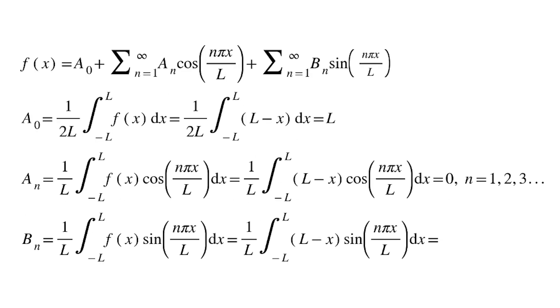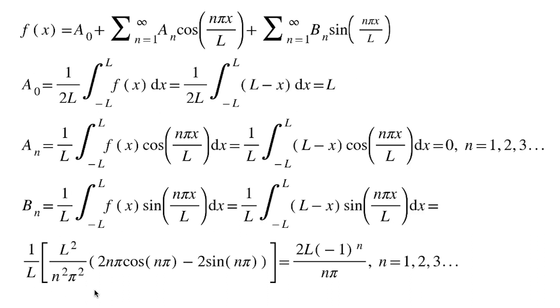For BN, you might have to do a little more work, but the logic is pretty much the same. Plug into the equation, replace f of x with L minus x, and this time, instead of cosine, it's sine. Do the integration, you get this somewhat ugly-looking equation, but it reduces somewhat nicely.